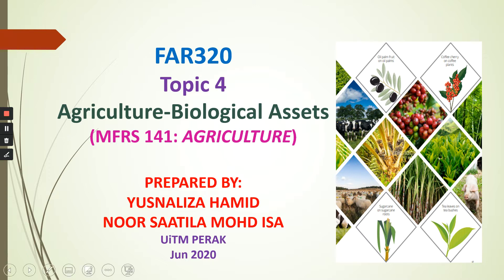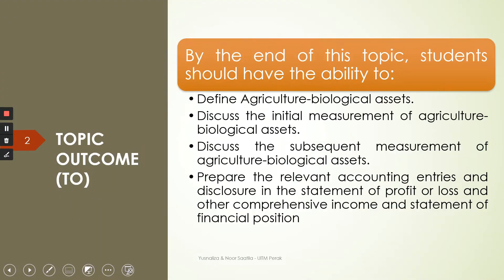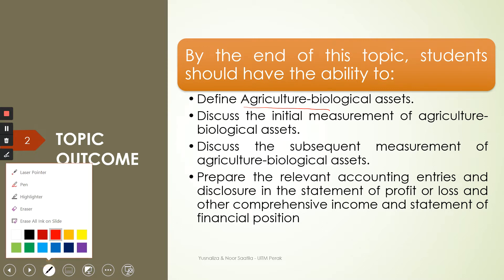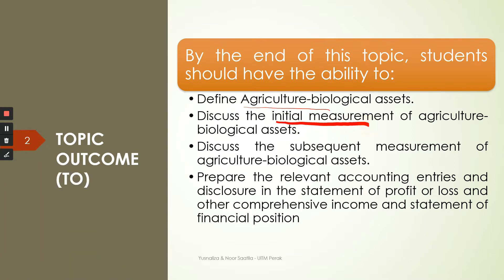So let's start. The topic outcome is that you should be able to define agricultural or biological assets at the end of the topic. Then you should be able to discuss the initial measurement of agricultural or biological assets. Biological assets refer to living animals and living plants — not tangible items which do not have life, but living things.